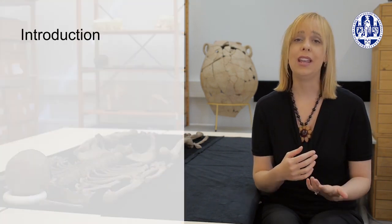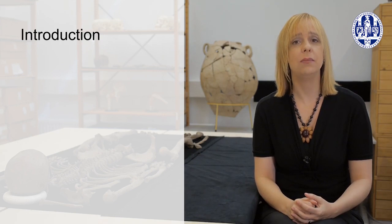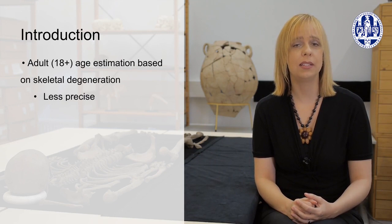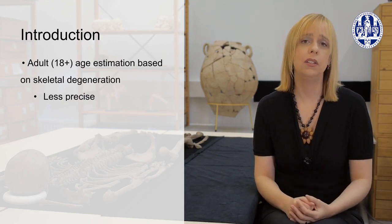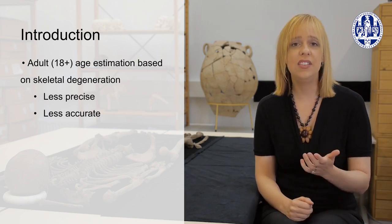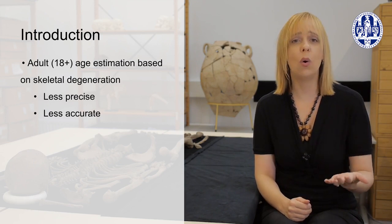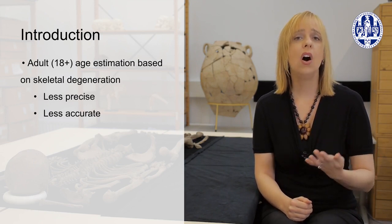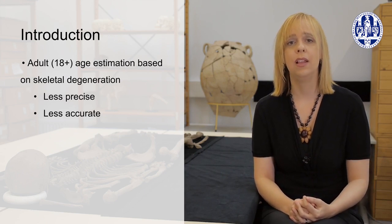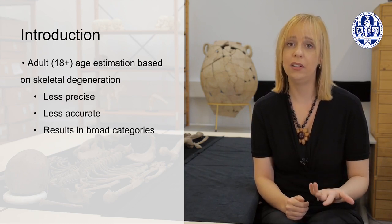As you'll see, many of our adult age at death methods yield estimates with large ranges — they are fairly imprecise. This is to accommodate the large inaccuracy that we encounter. Factors such as activity and occupation, diet, disease, sex and hormones, and ethnicity all influence the rate at which a person's skeleton breaks down, and these may be rather far removed from that person's calendar age.